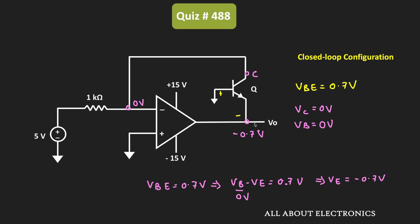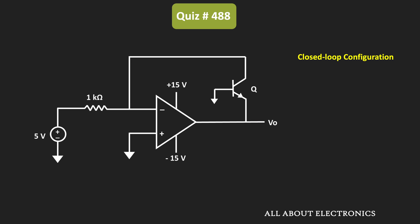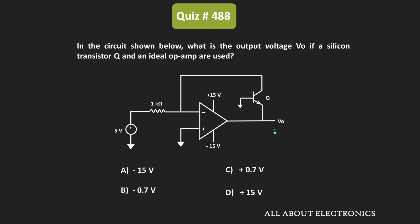Since the emitter terminal is the same as the output terminal, we can say that the output of the op-amp is also equal to -0.7V. So for the given circuit, the output voltage is equal to -0.7V, and therefore -0.7V is the correct answer.